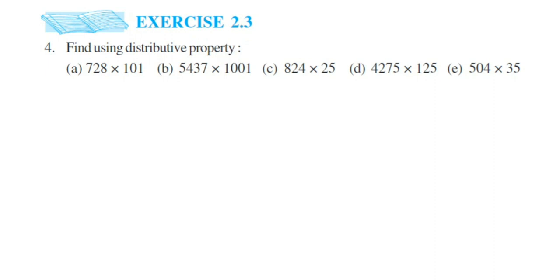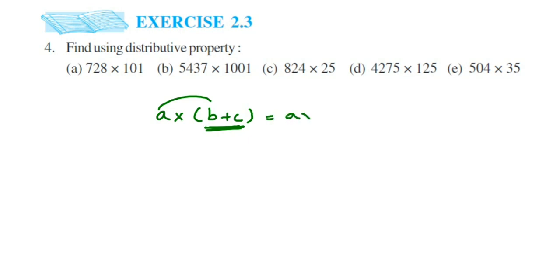Distributive property means: suppose I have a number like a into b plus c. You can see that I have something in a bracket, b plus c, or it could be b minus c. I am taking the example of addition here. So b plus c, and there is a number getting multiplied — a multiplied by b plus c. In that case, a will get multiplied with b. Opening the brackets, this is equal to a into b, then plus a into c.